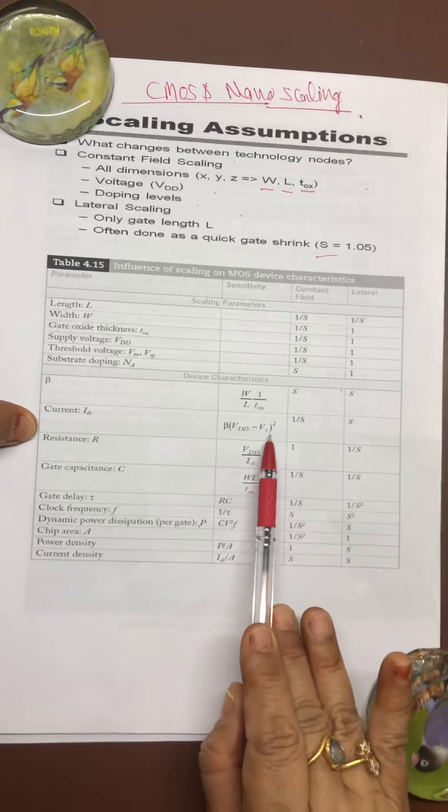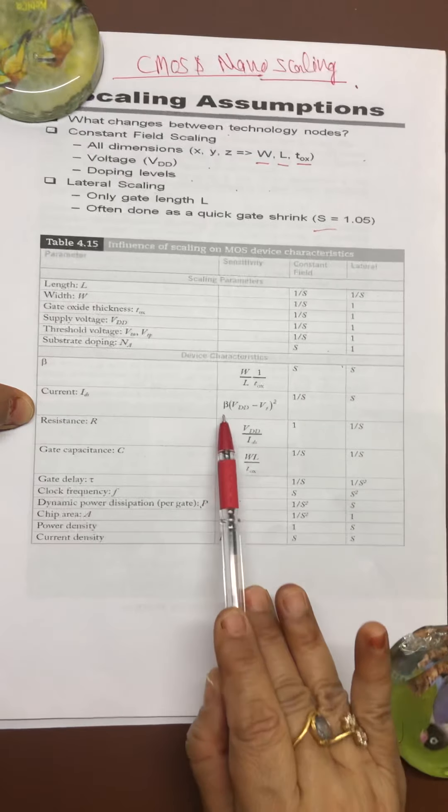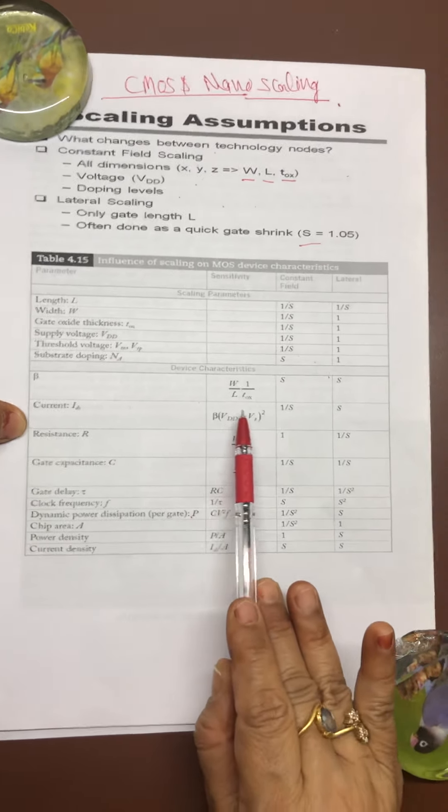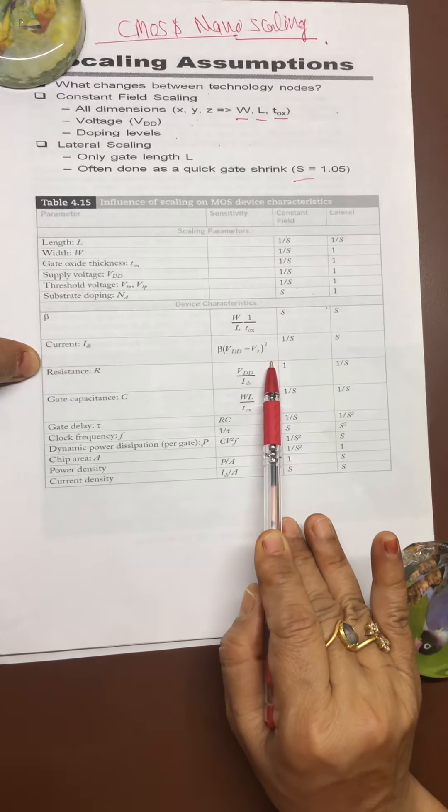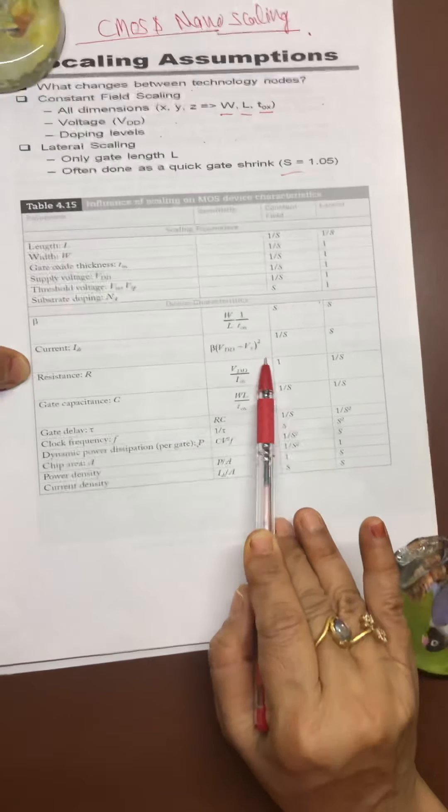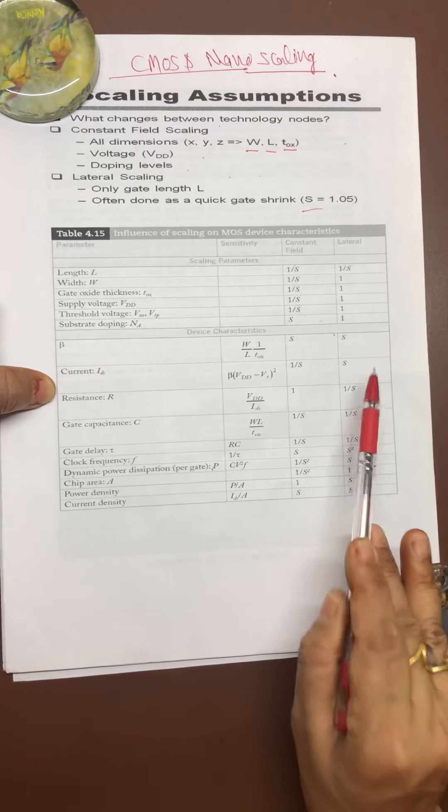For non-saturation, what is the formula? That is beta times V_DS times (V_GS by 2 minus V_DS squared by 2). That is the formula which is going to be used for the non-saturation region, and the values with respect to constant and lateral field is 1 by S and S.